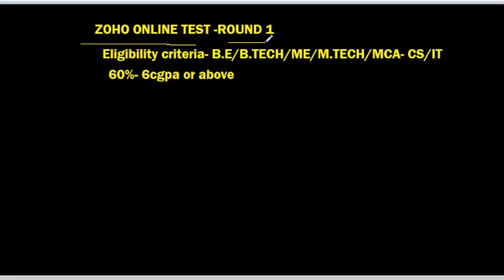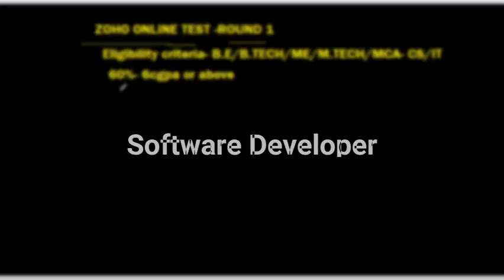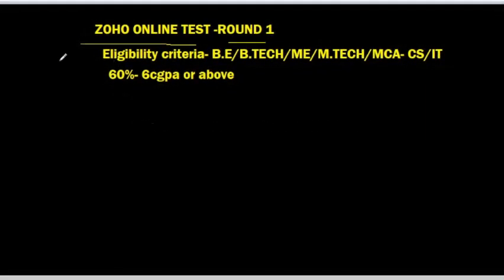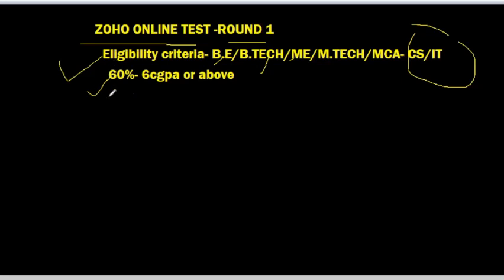Before moving ahead, let's talk about the eligibility criteria. Joho hires for software developers and software engineers. The eligible degrees are BE, BTECH, ME, MTECH, and MCA, and CS/IT branch students can apply. For percentage criteria, you should have 60% or 6 CGPA or above in your academics.